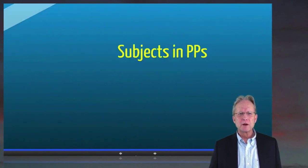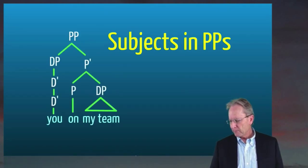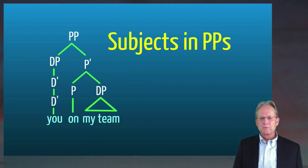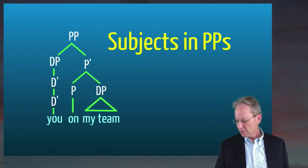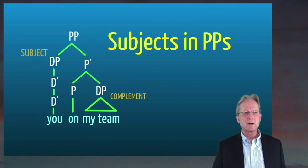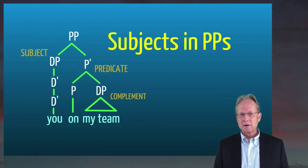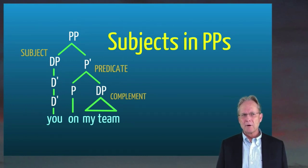So let's consider now subjects inside of prepositional phrases. If we think of prepositional phrases like this on my team, it's possible to have within them another DP besides the complement my team. So on is a preposition is the head of a prepositional phrase. It has my team as its complement, but it can also have together with that the person or individual or entity that's located with respect to my team in the relationship of on. So you on my team has you in the specifier slot of that prepositional phrase. So there's a complement, a subject in the specifier slot, and we can think of on my team as being a predicate. So it has the structure of subject and predicate.